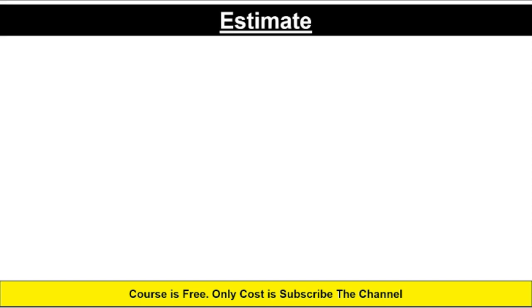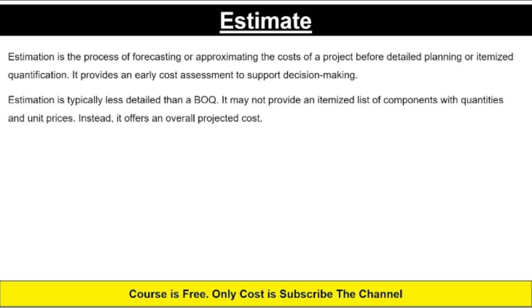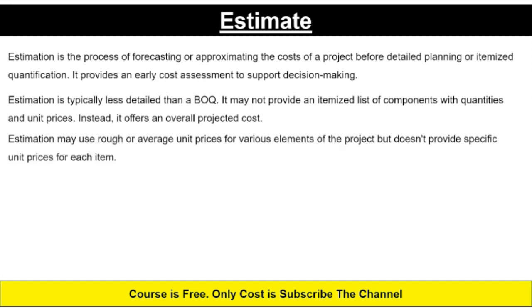Now we will see what estimation means. Estimation is the process of forecasting or approximating the cost of a project before detailed planning or itemized quantification. It provides an early cost assessment to support decision making. Estimation is typically less detailed than a BOQ — it may not provide an itemized list of components with quantities and unit prices; instead it offers an overall project cost using rough or average unit prices for various elements.